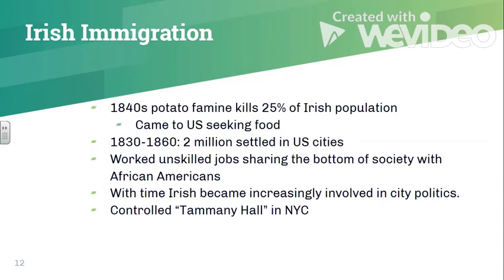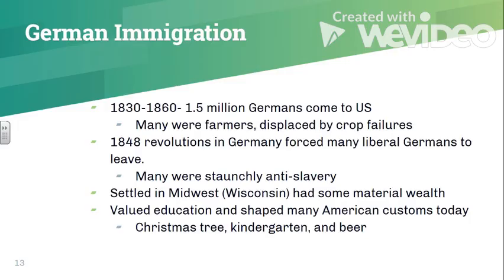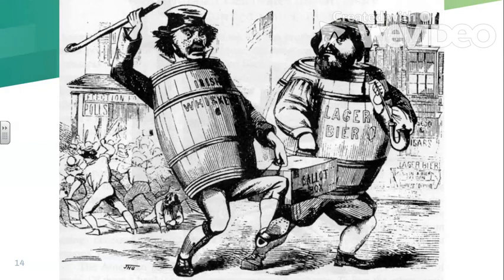The other group coming to the United States in large numbers during the same period are Germans. Many were farmers displaced by crop failures, but a large chunk are liberal revolutionaries who, because of war and conflict in Germany, had to leave. Many of this number are abolitionists, settling in the Midwest and northern cities, and they'll be one of the voices leading the abolitionist movement. German immigrant groups brought many things we have in society today — things such as the Christmas tree, kindergarten, and of course beer.